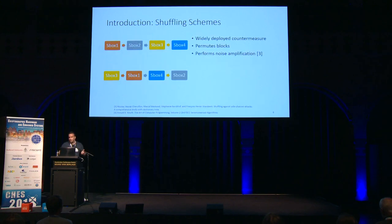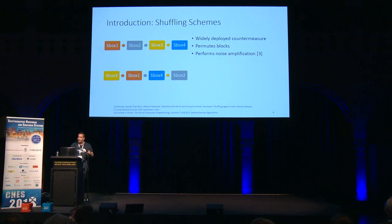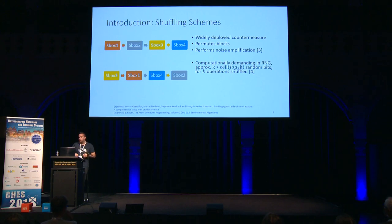Similarly, shuffling is also quite widely deployed. It permutes blocks, so if you are processing S-boxes of a cipher serially — one, two, three, four — you will permute their order, perhaps three, one, four, two. The countermeasure performs noise amplification in a different way than masking, and it comes with an RNG overhead of approximately K log K random bits if you want to shuffle K things.